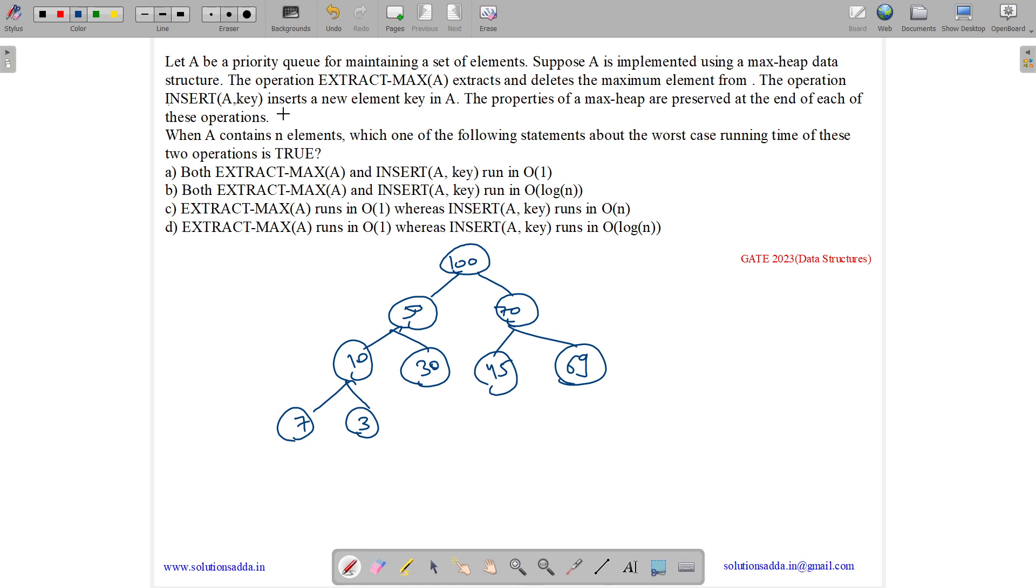So we have extract max. So how do we perform extract max? If you want to delete the maximum item, then you basically replace it with the last item. What's the complexity for replacing? Order of one. Then you basically delete this last item. Its complexity is order of one. So this is deleted. Now what you do, then you perform the heapify operation. So what is the heapify operation?